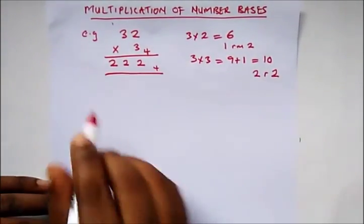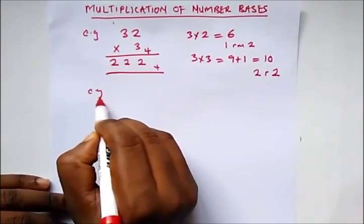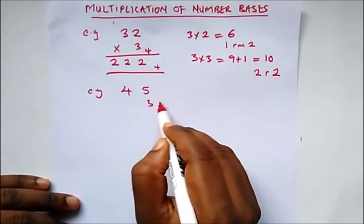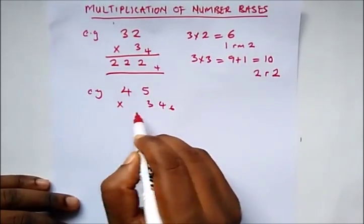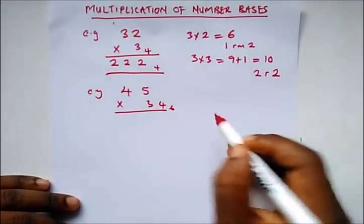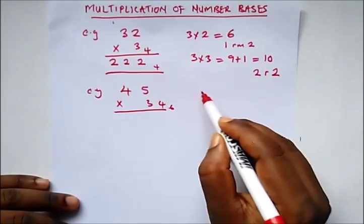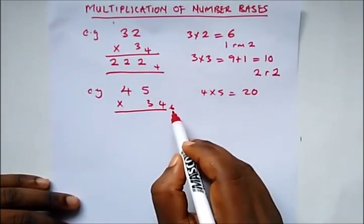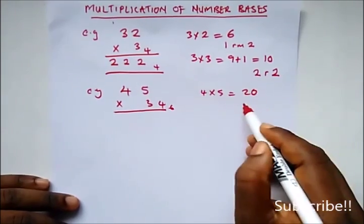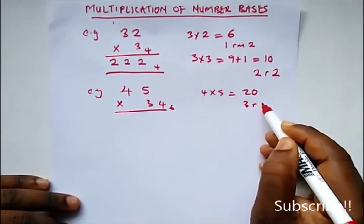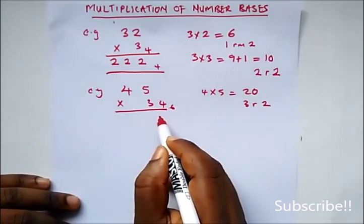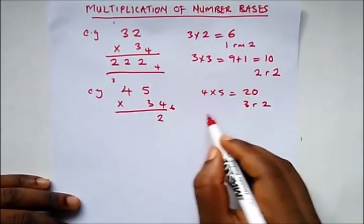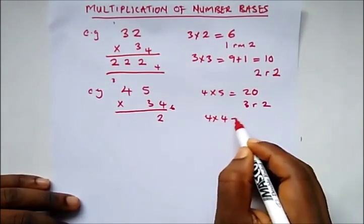For another example and further clarification, we have 45 multiplied by 34 in base 6. So 4 times 5 is 20. How many times would 6 go into 20? Then 4 times 4 gives us 16.